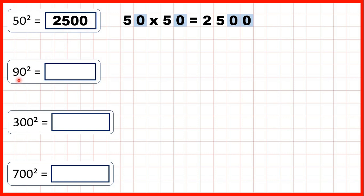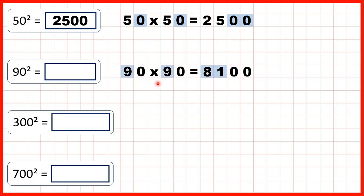Now we have 90 squared, so that's 90 times 90. That's 8,100, because 9 times 9 is 81, and again, if we have a total of two end zeros in our multiplication question, we need two end zeros in our answer. So that's 8,100.